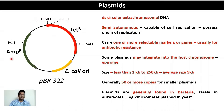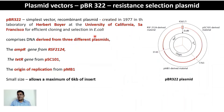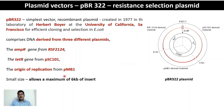pBR322 is not a naturally occurring plasmid — it is an engineered plasmid created in the laboratory of Herbert Boyer at the University of California, San Francisco in 1977 for efficient cloning and selection in E. coli. It comprises parts from three different plasmids: the ampicillin resistance gene from RSF2124, the tetracycline resistance gene from pHC101, and the origin of replication from pMB1.